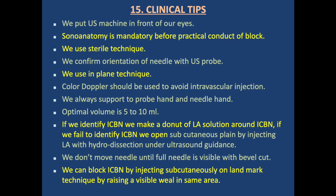Clinical tips: place the ultrasound machine in front of the operator to avoid neck movement. Sonographic anatomy review is mandatory before the block. Use sterile technique. Confirm needle orientation with the ultrasound probe. Use in-plane technique. Use color Doppler to avoid intravascular injection. Always support the hand holding the probe and the hand holding the needle. Optimal volume is 5–10 ml. If the intercostal brachial nerve is identified, make a donut of local anesthetic around it. If not identified, open the subcutaneous plane by hydrodissection under ultrasound. Do not move the needle until the full needle length is visible. The nerve can also be blocked by the landmark technique, raising a visible subcutaneous wheal in the same area.